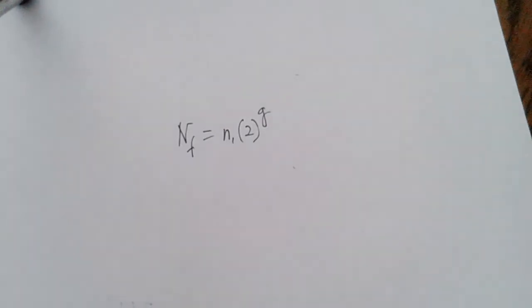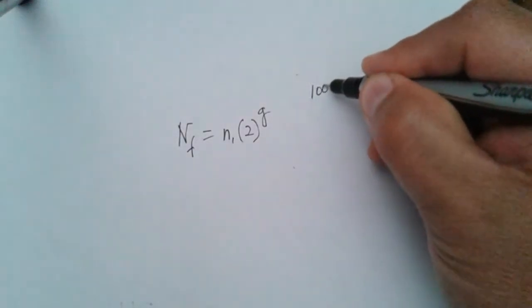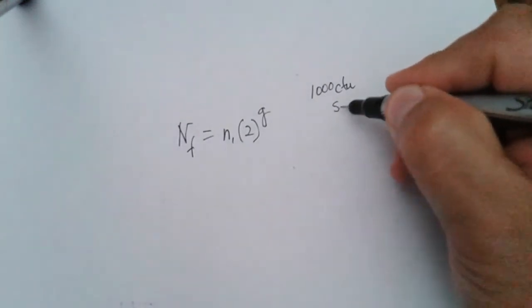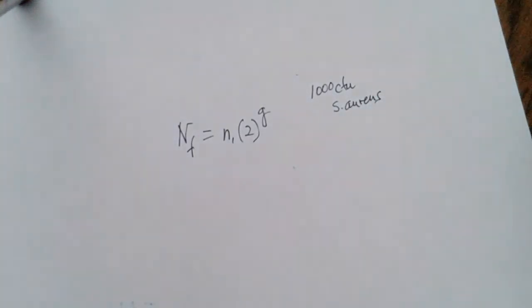So let's just make this real easy. So when we think about this, if we just say that we have a chicken salad sandwich or something like that, that initially has 1,000 CFUs. So it has 1,000 CFUs of Staph aureus.